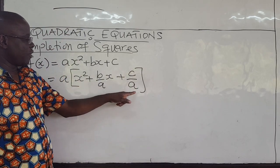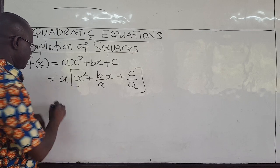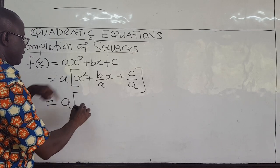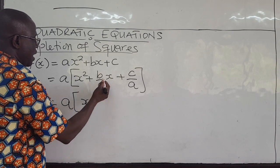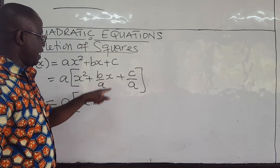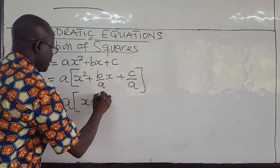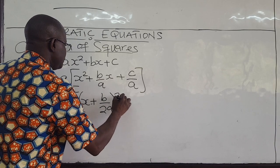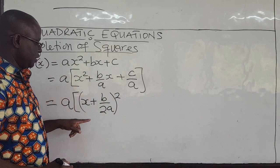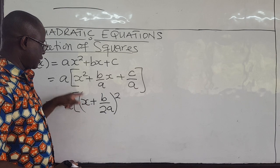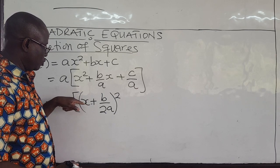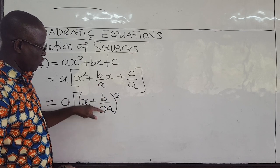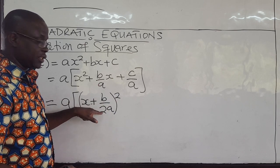What you do next is take x plus half of the coefficient of x, which is b over 2a, and square all of this. Notice that when you expand this, you're going to have x squared plus 2 times x times b over 2a, but you have the extra term b over 2a squared remaining, so you need to subtract that.